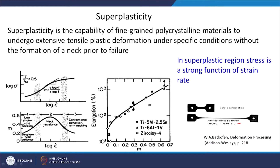When the strain rate sensitivity m of the material increases, the elongation increases. For example, m of 0.6 gives elongation of around 1000 percent — these results are true for different sets of materials such as titanium and zircaloy. When m is lower than 0.4 or around 0.3, you cannot even reach 100 percent elongation, and as m approaches 0.1, elongation is around 50 percent. So elongation is a strong function of strain rate sensitivity.